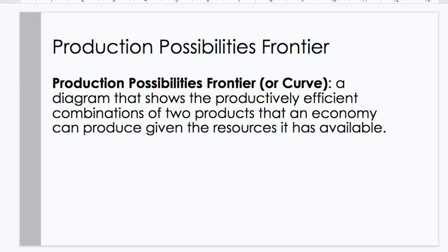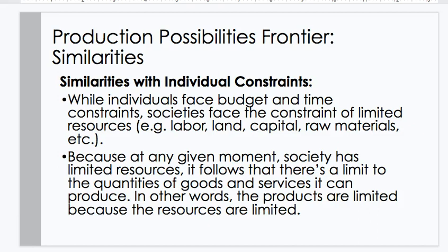Now let's look at the production possibilities frontier — the PPF or PPC. It's a diagram that shows the productively efficient combinations of two products that an economy can produce given the resources it has available. While individuals face budget and time constraints, societies face the constraint of limited resources — e.g., labor, land, capital, raw materials, etc. Because at any given moment society has limited resources, there's a limit to the quantity of goods and services it can produce. The products are limited because the resources are limited.